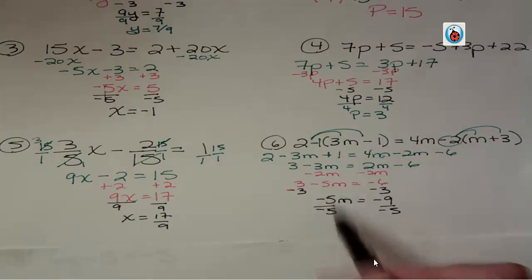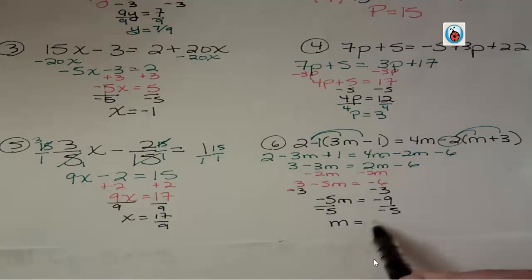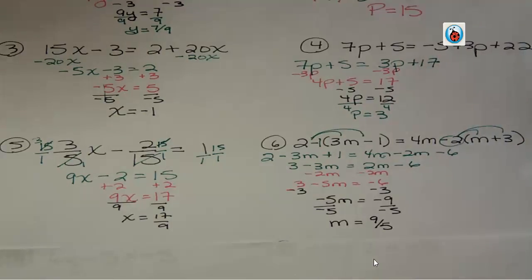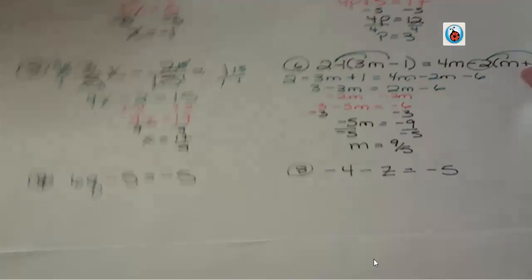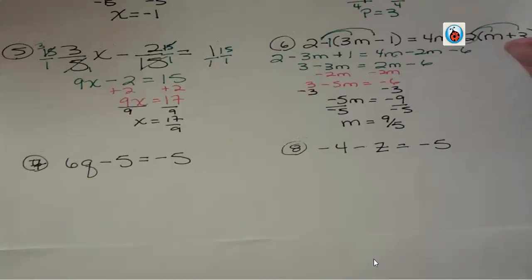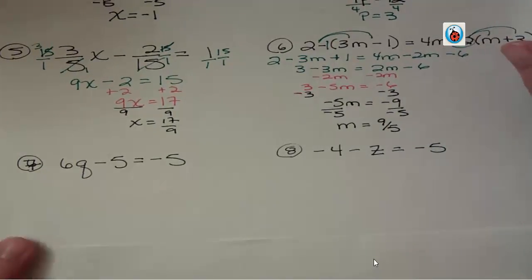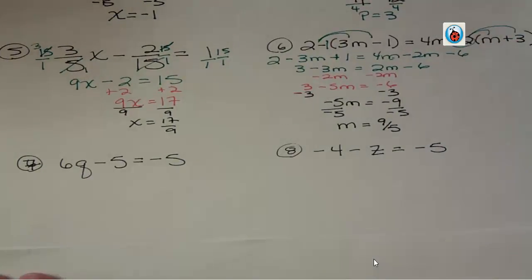I'm going to divide both sides by the coefficient. The coefficient is negative 5. Those cancel out, leaving m equals 9/5ths. Notice that I have a negative on top and bottom. When I have a negative on the top and the bottom, I'm going to cancel those out because it's like a common factor of negative 1. And I always want to get rid of common factors.